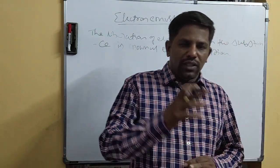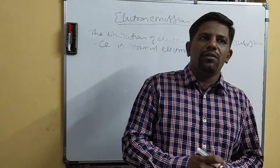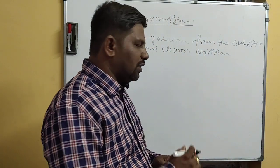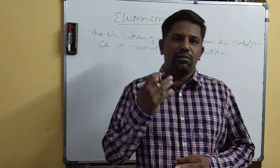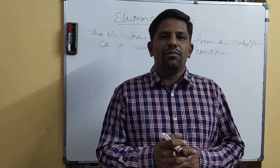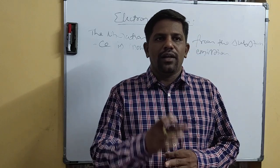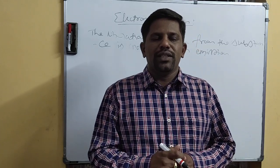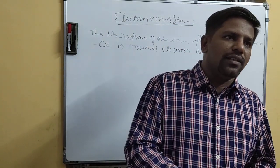We know that there are four types of Electron Emission. The first one is Thermionic Emission, the second one is Photoelectric Emission, the third one is Field Emission or Cold Emission, and the last one is Secondary Emission.